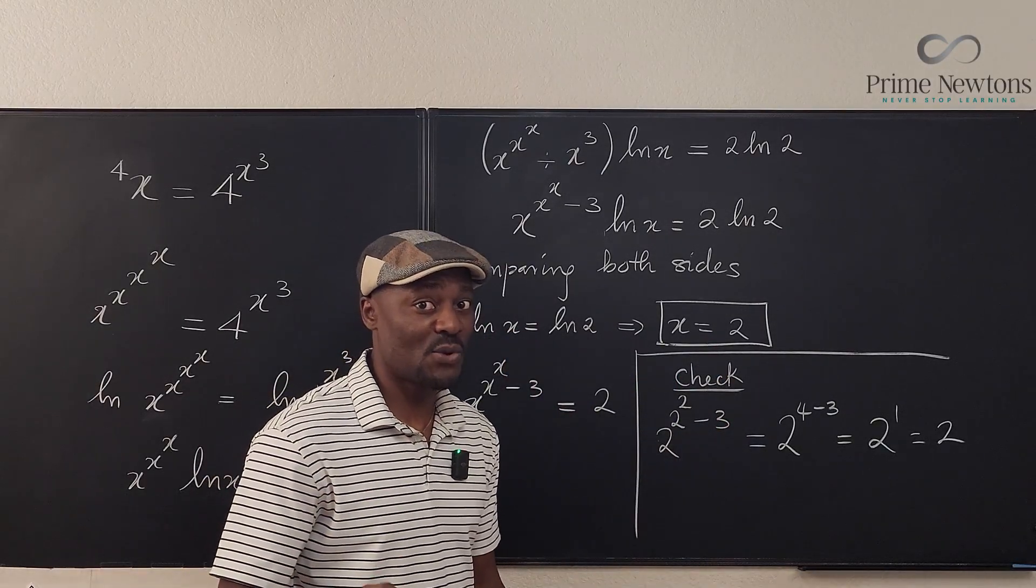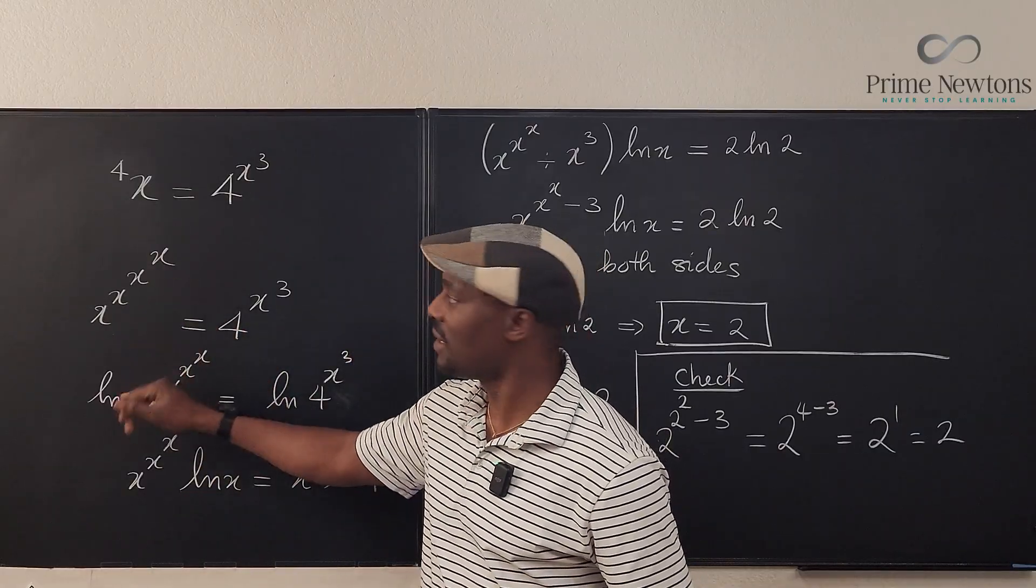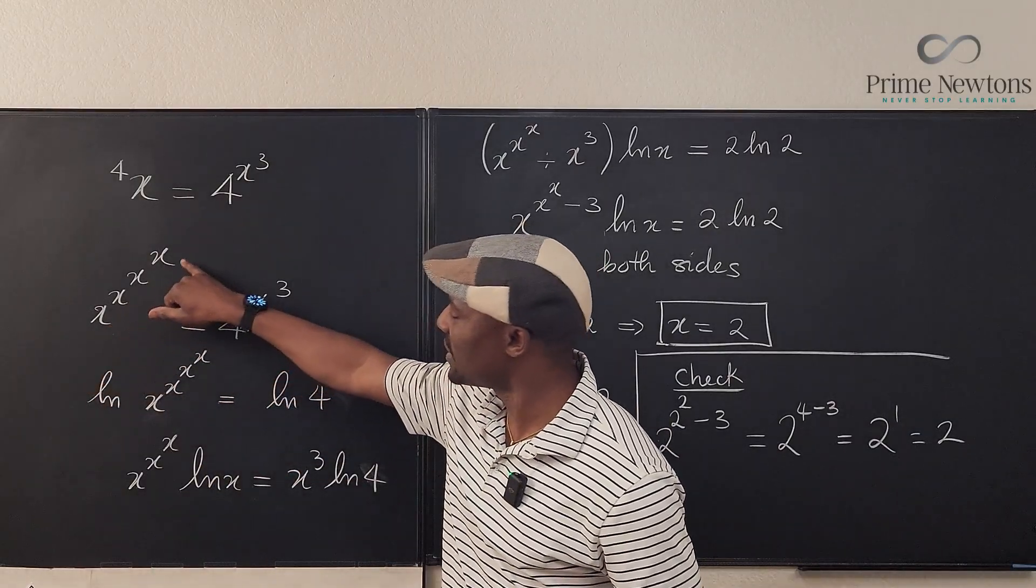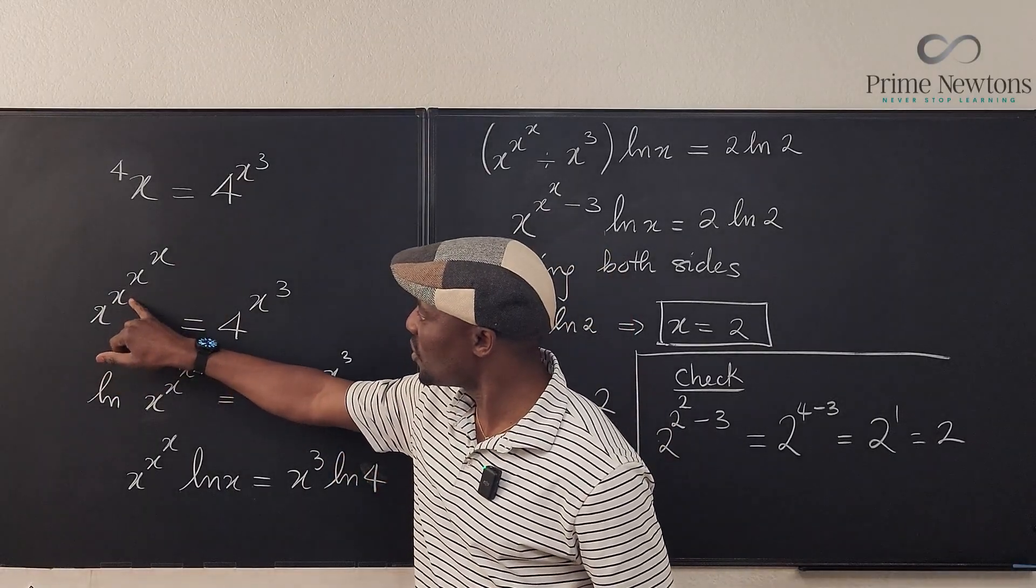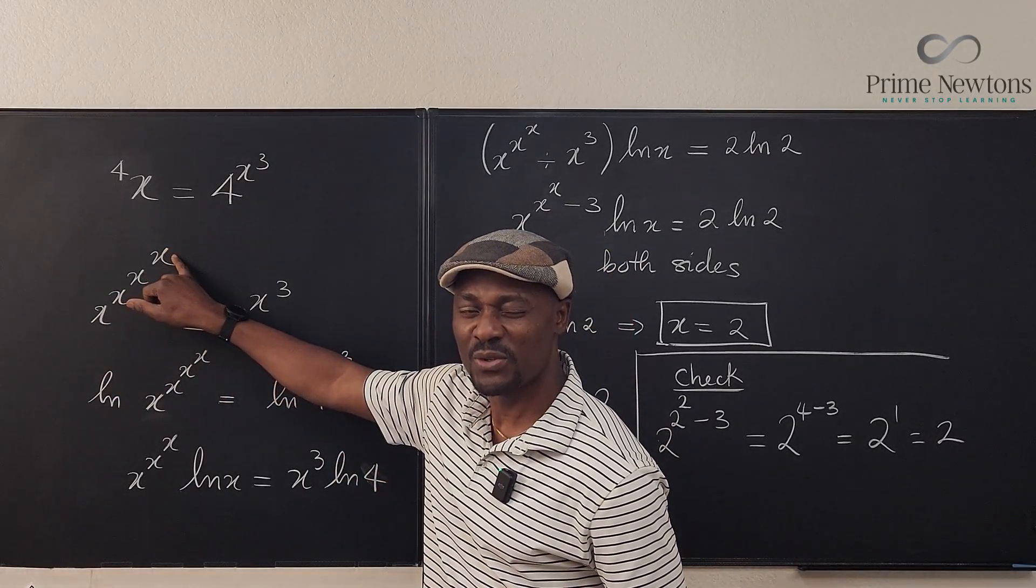One of the other answers is x equals 0, and you can clearly see that by just guessing. But if you put a stack of zeros, does that make this side 1? Because this side is going to be 1. Will 0 raised to power 0 to the 0 to the 0 be equal to 1?